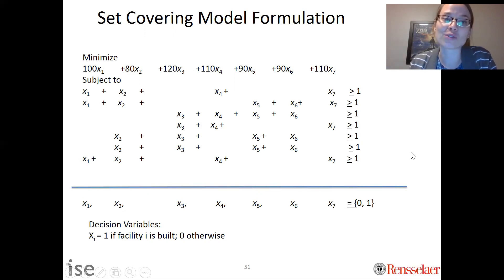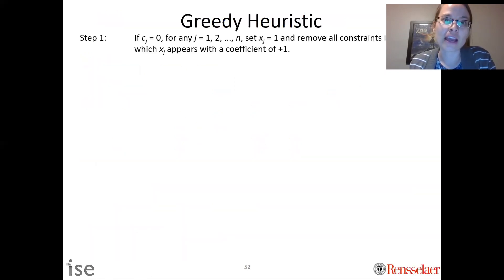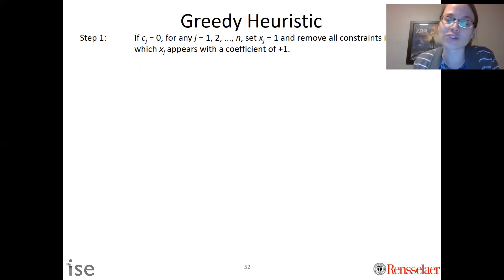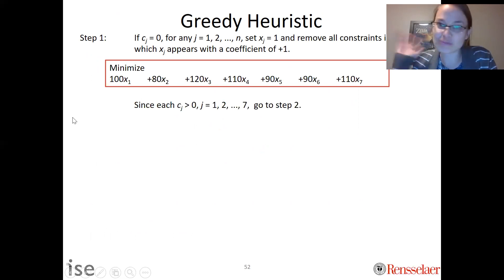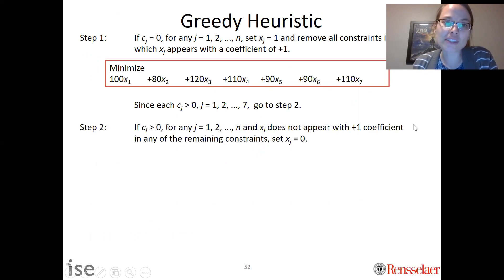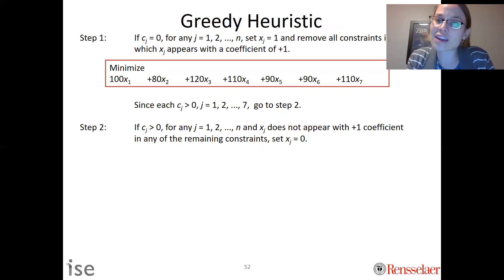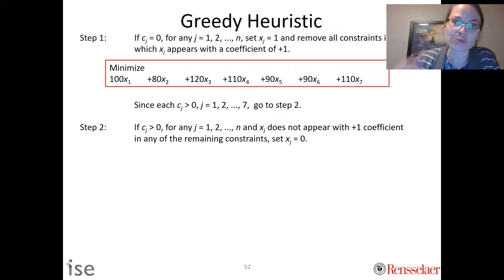Now let's solve it using the greedy heuristic. Step one: if c_j equals zero for any location, build there and remove all constraints where it appears. Looking at our costs, none of the c_j values are zero, so we move to step two. Step two: if c_j is greater than zero and x_j does not appear with a positive one coefficient in any remaining constraint, set x_j to zero. But here all variables — x1 through x7 — appear in the constraints, so we move on to step three.